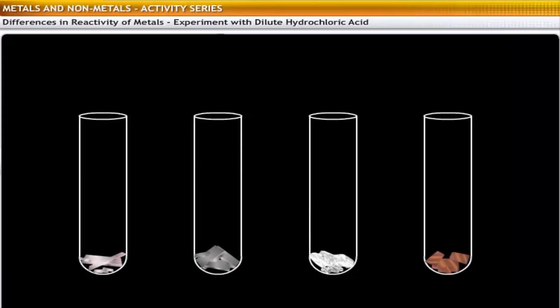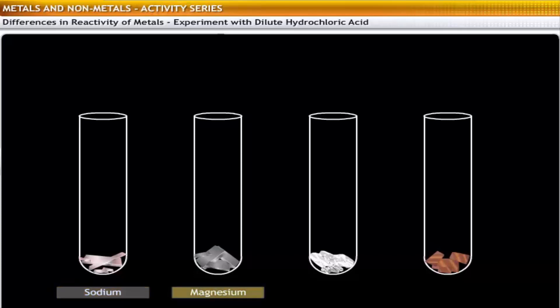You can observe the differences in reactivity of various metals through an experiment. Take samples of four metals — sodium, magnesium, calcium and copper — in different test tubes.